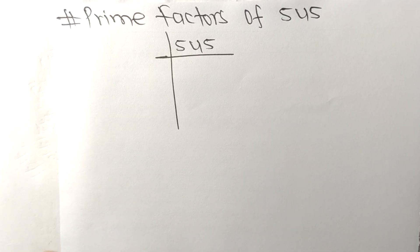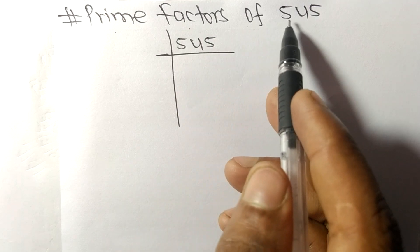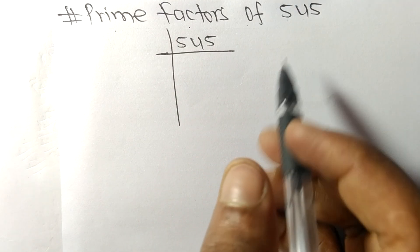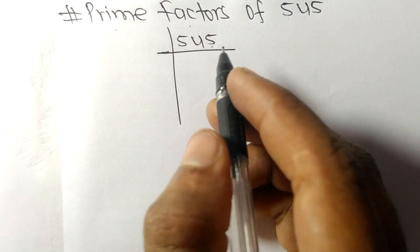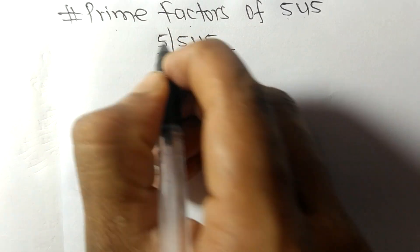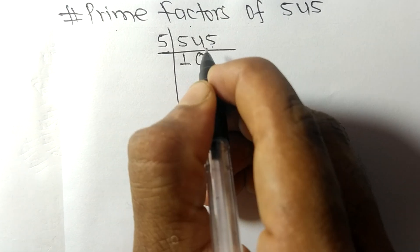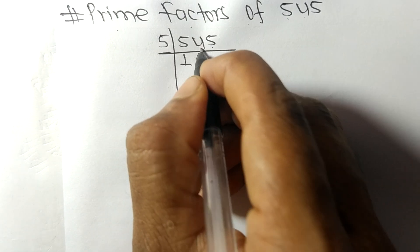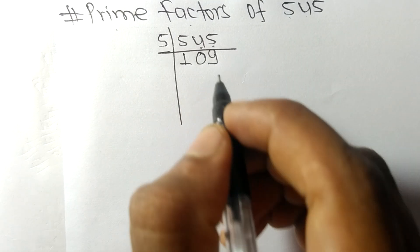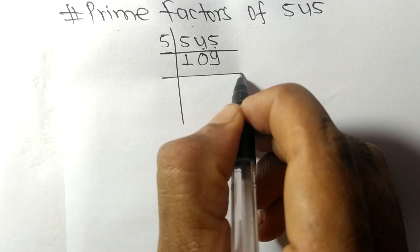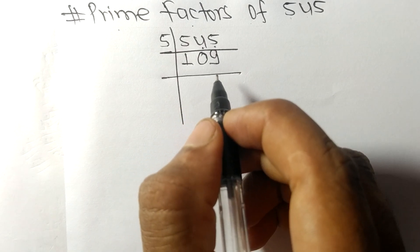Today in this video we shall learn to find the prime factors of 545. It contains 5 at last, so this whole number is divisible by 5. 5 times 1 is 5, 5 times 0 is 0 with remainder 4. Then 45: 5 times 9 is 45. Now we got here 109 which is a prime number.